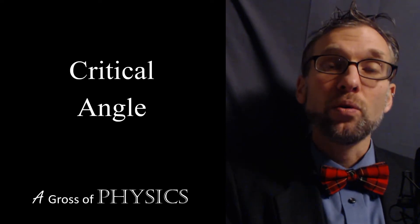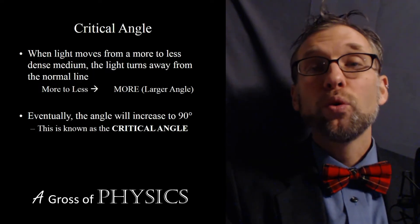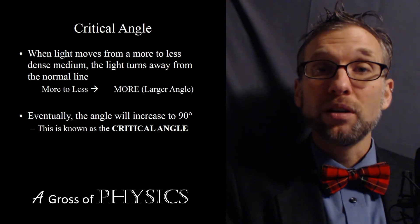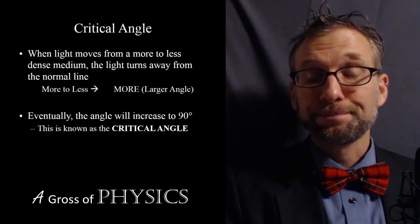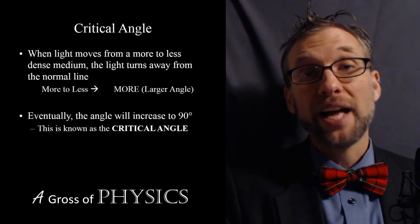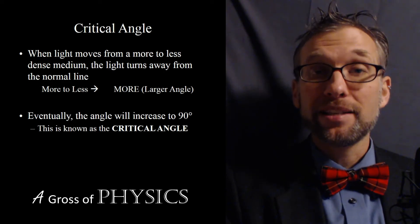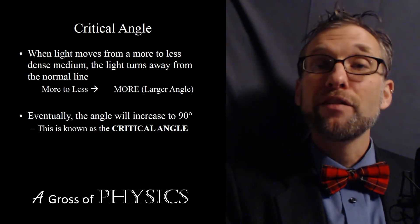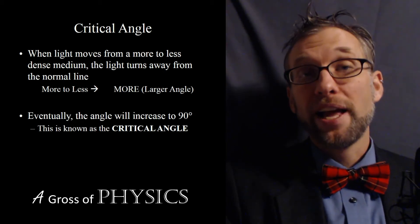So there's a value at which the light will turn away from the normal, and that's as big as it can get. We call that the critical angle — the angle of incidence which will produce an angle of refraction of 90 degrees. And every material has its own critical angle.